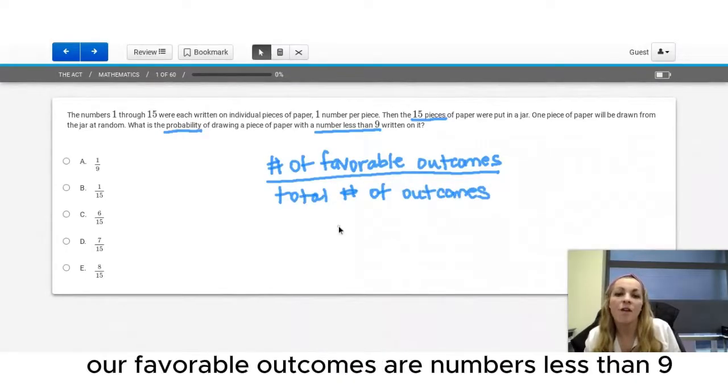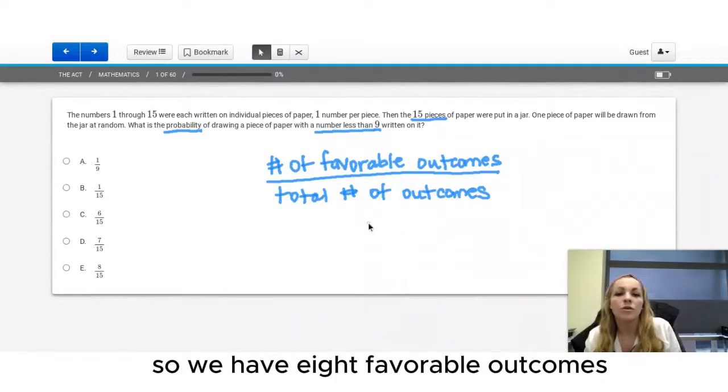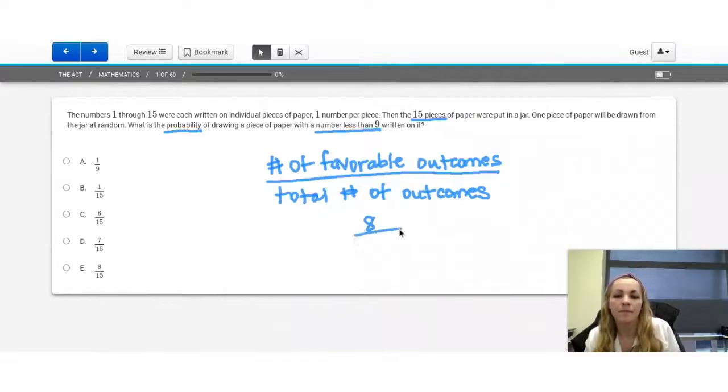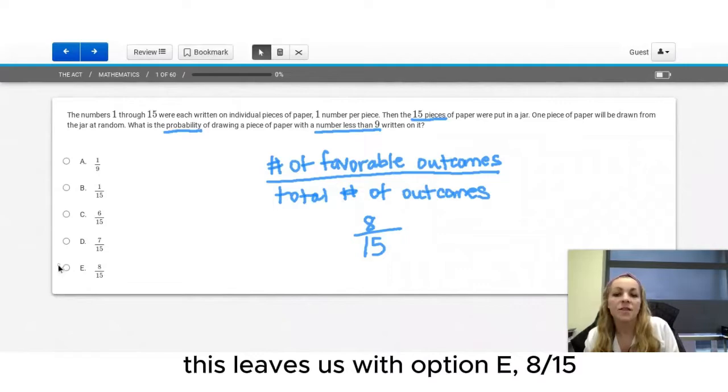In this case, our favorable outcomes are numbers less than 9. So we have 8 favorable outcomes. Our total number of outcomes is 15. This leaves us with option E, 8 15ths.